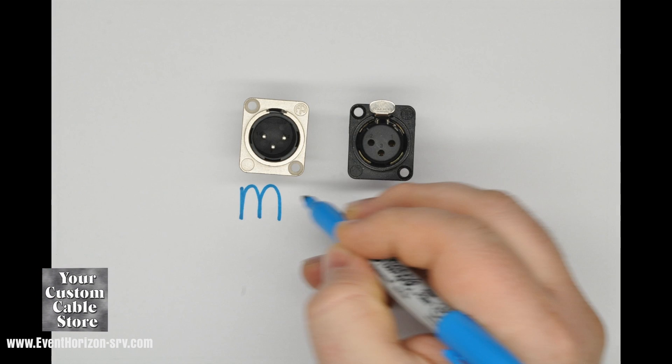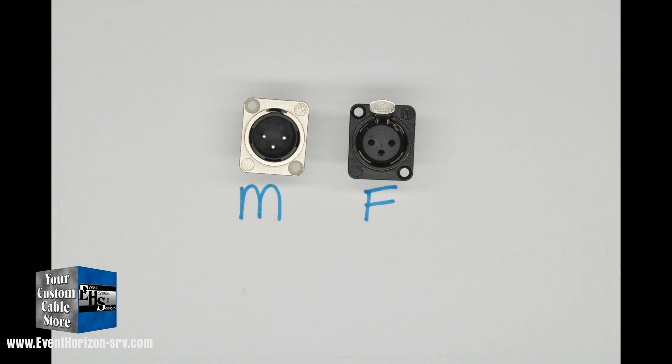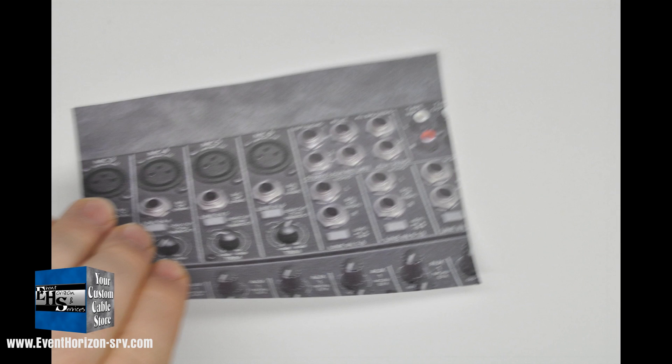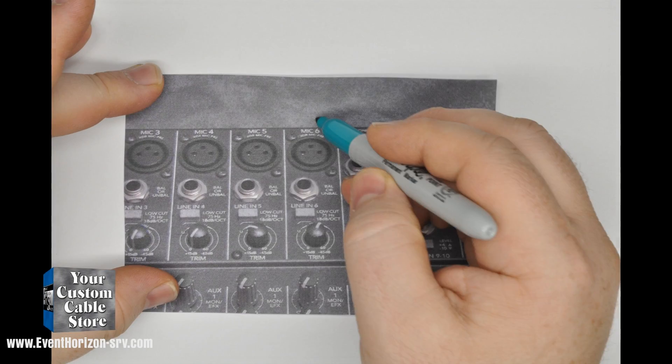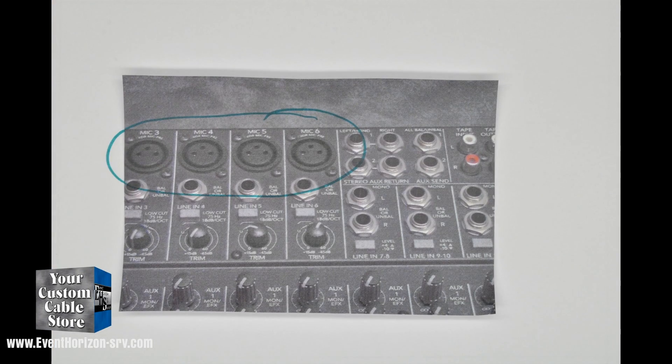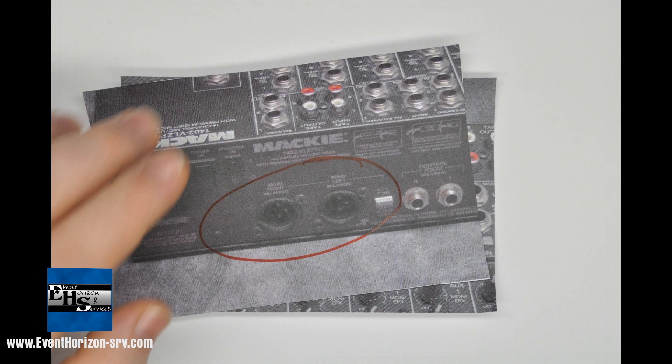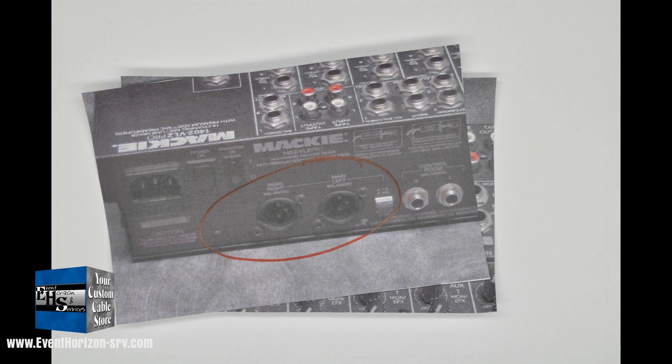So far, we have been looking at cable mount connectors. Here are some examples of panel mount connectors. These are female XLR panel mount connectors and are for the mic inputs on this mixer. These are male XLR panel mount connectors and are for the main outs on this mixer.